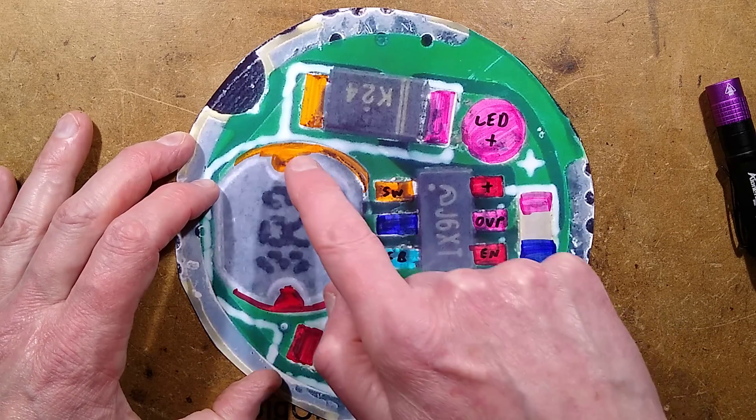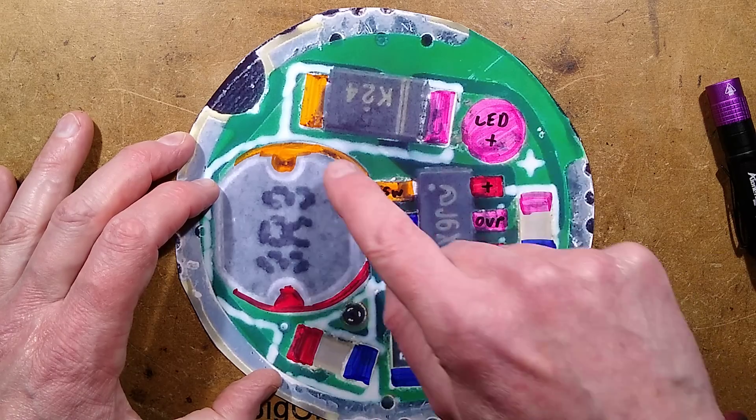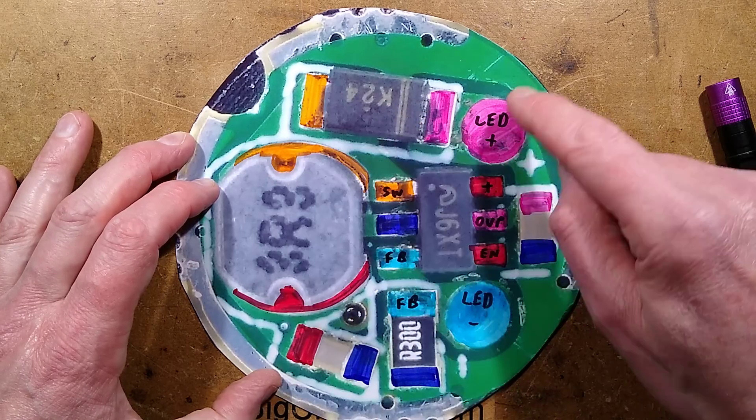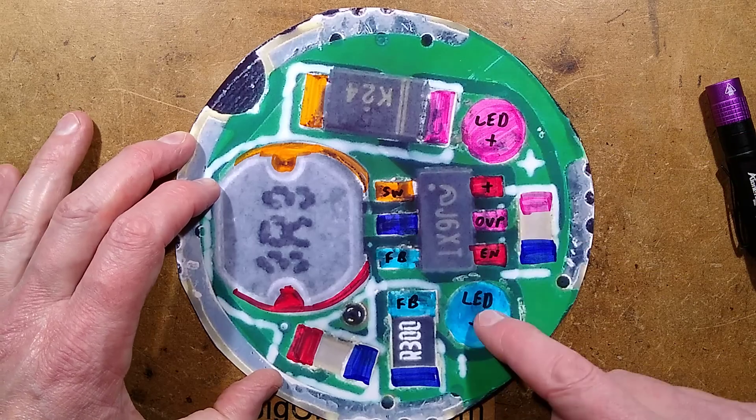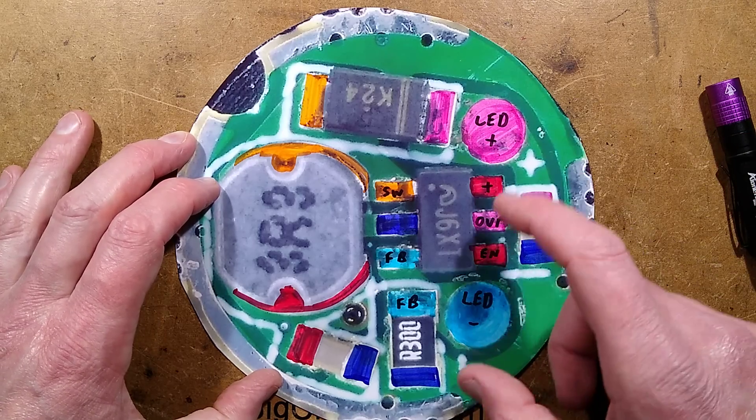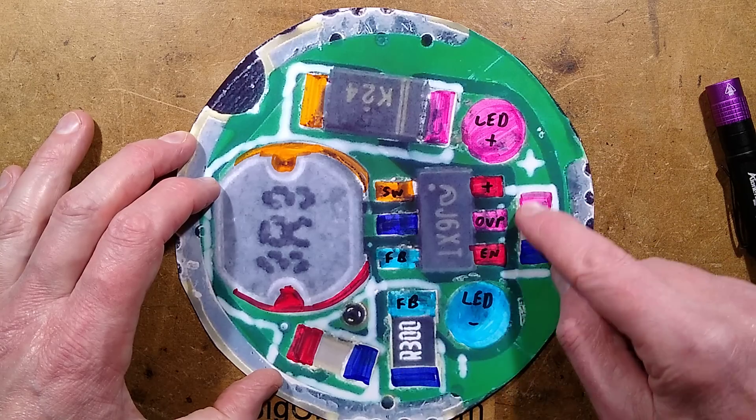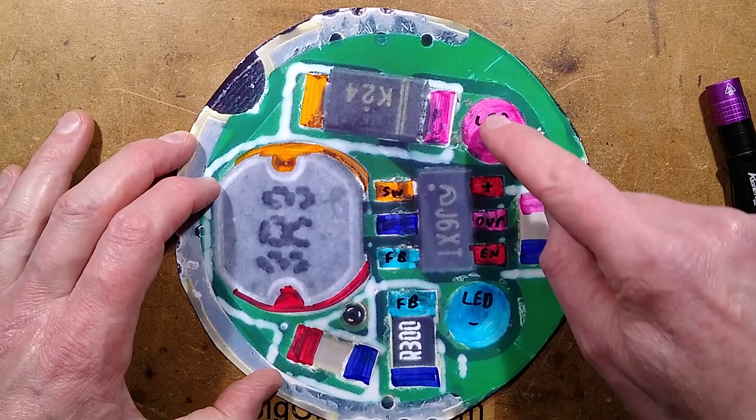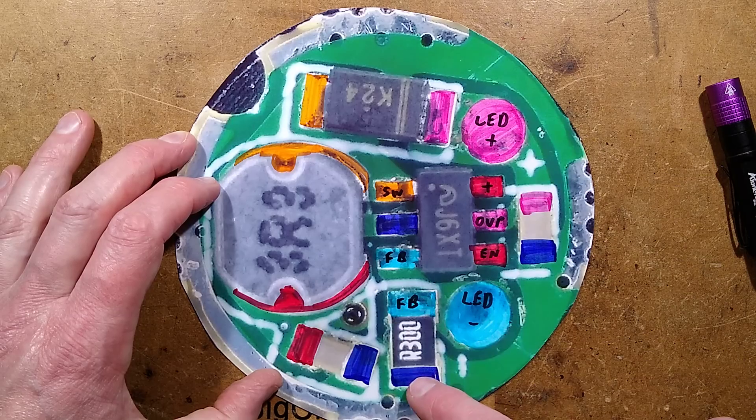The switched end of the inductor that pulses to produce the higher voltage goes via this Schottky diode to the LED. The current passes through the LED and also across the LED and a feedback resistor is this capacitor here.